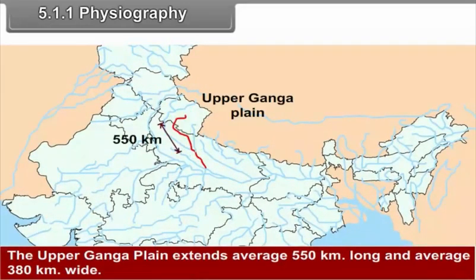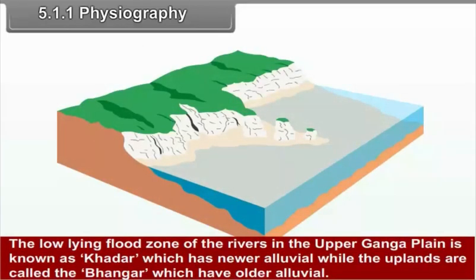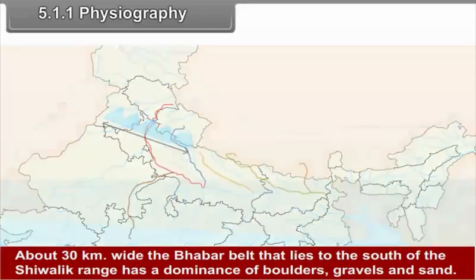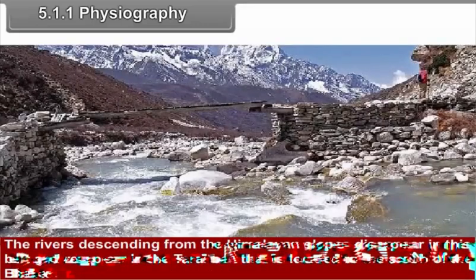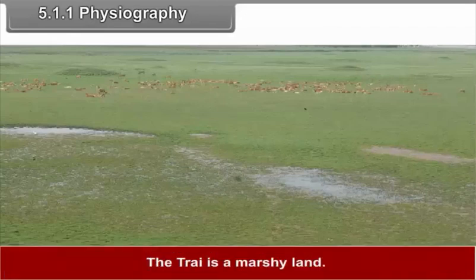The upper Ganga plain extends on average 550 km long and 380 km wide. It is located in western Uttar Pradesh. The low-lying flood zone of the river in the upper Ganga plain is known as Khadar, which has newer alluvial, while the uplands are called the Bhangar, which have older alluvial. About 30 km wide, the Bhabar belt that lies to the south of the Shivalik range has a dominance of boulders, gravels and sand. The rivers descending from the Himalayan slopes disappear in this belt and reappear in the Tarai belt located to the south of Bhabar. The Tarai is a marshy land.